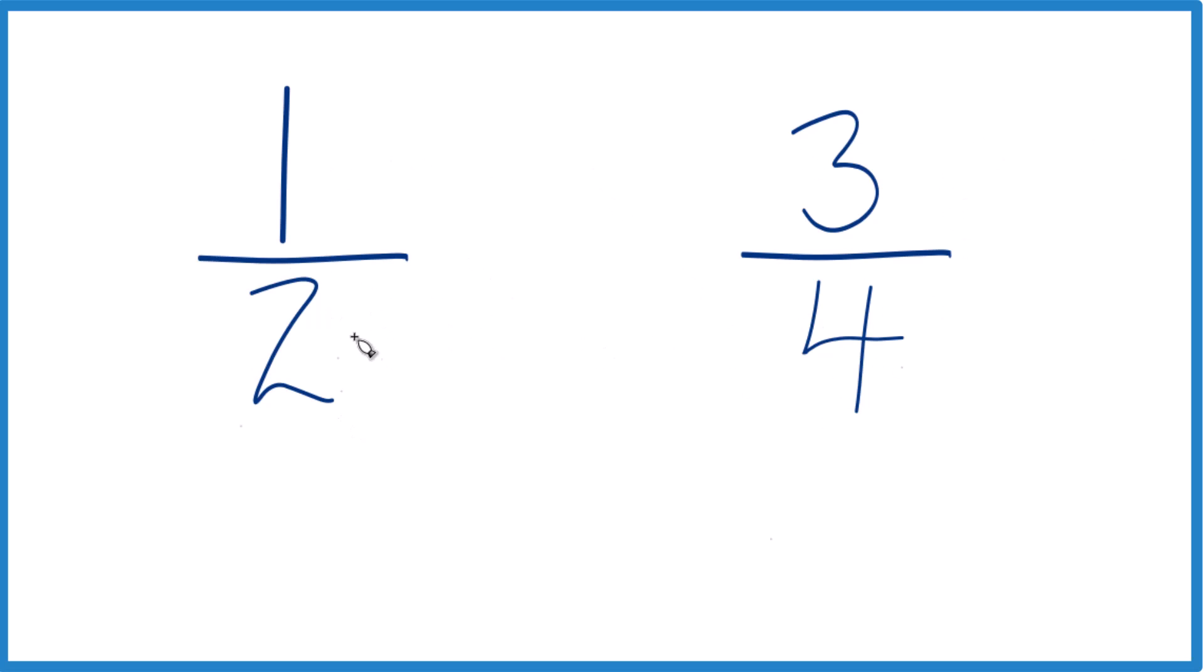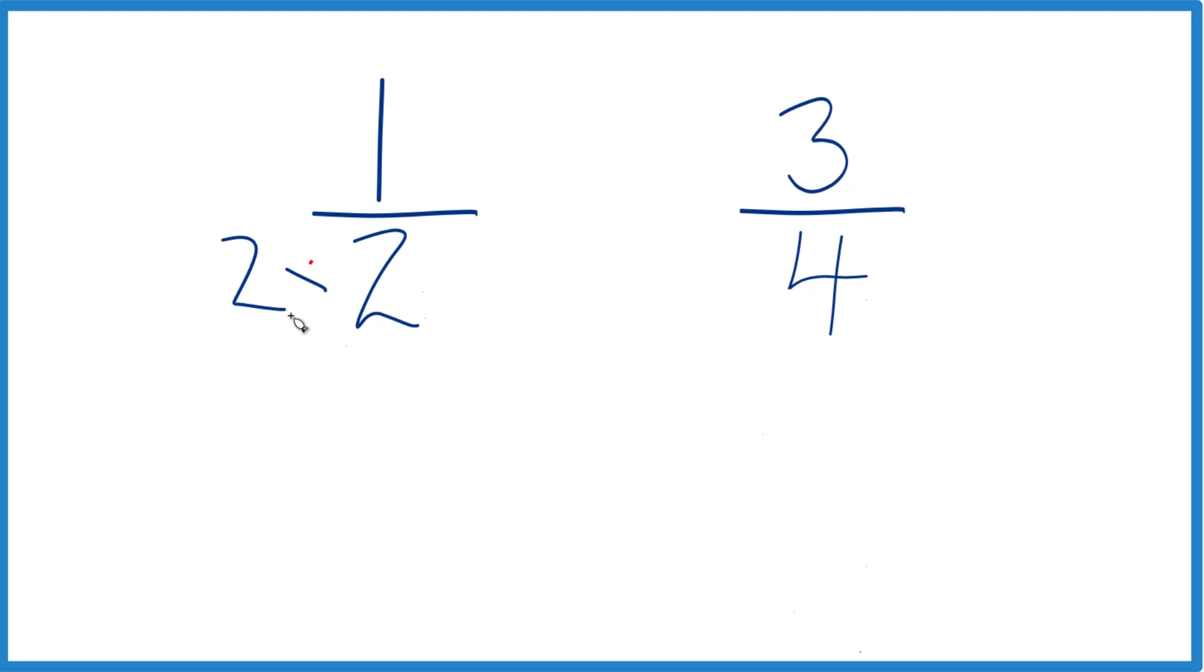You can also do it this way: if we have the same denominator, we can just compare the numerators. So let's multiply two times two, because that would give us four. We have to do it on the top as well though—two times one...